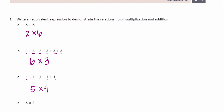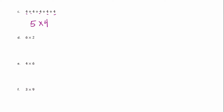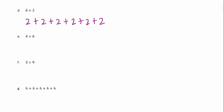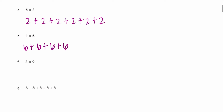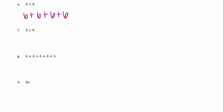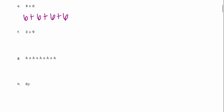We have one, two, three, four, five — five groups of four. Then six times two: we have six groups of two, so two plus two plus two plus two plus two plus two. And four times six: we have four sixes, so six plus six plus six plus six. Three times nine gives us three groups of nine: nine plus nine plus nine.